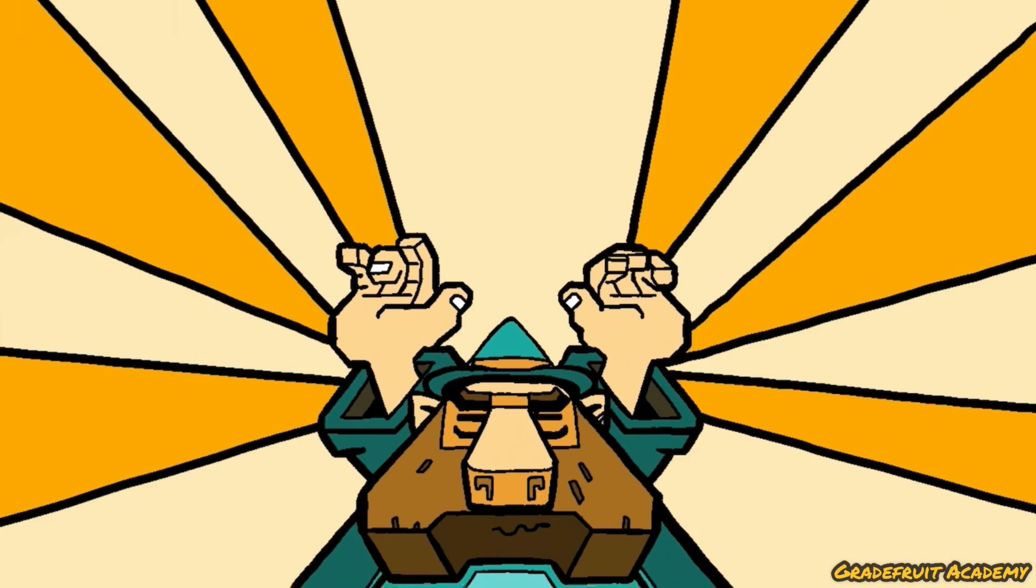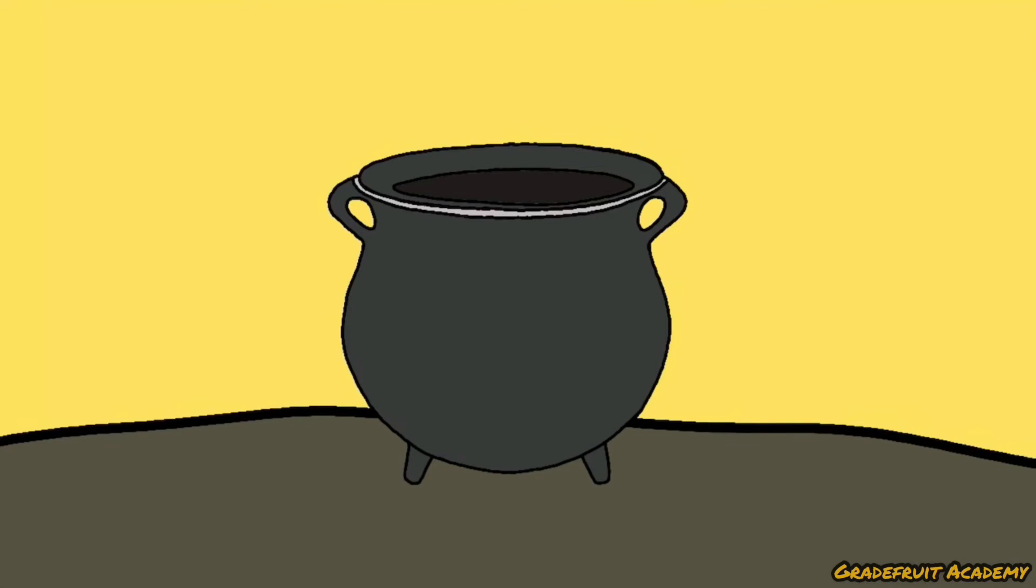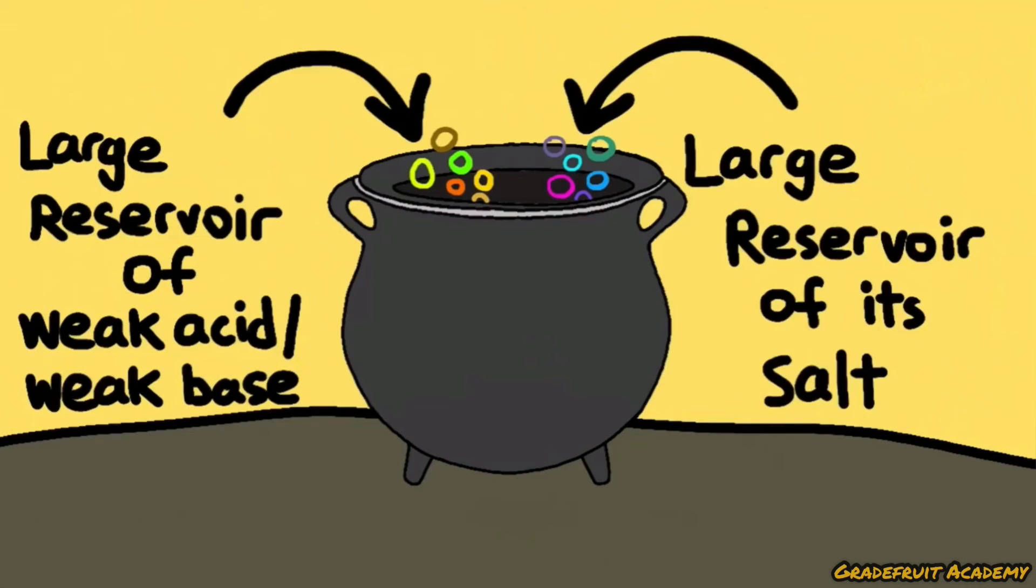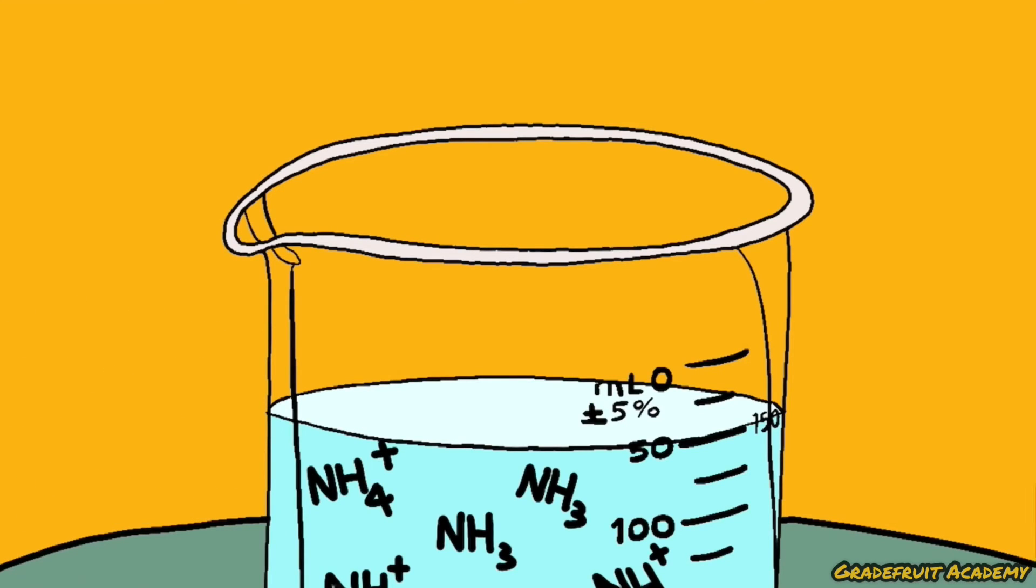The magic of buffer solutions are made possible by having a mixture of a large reservoir of weak acid or weak base with a large reservoir of its salt. So if a small amount of acid is added to an alkaline buffer, for example, the large reservoir of the unionized basic molecules will react with the acid and remove it from the system.